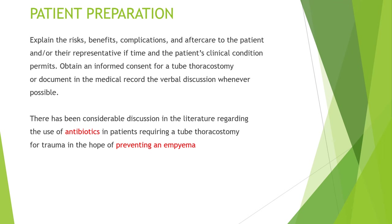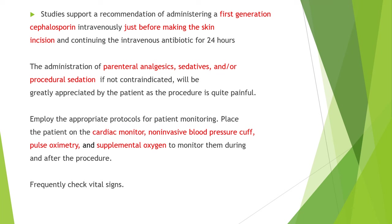Patient preparation: Explain the risks, benefits, complications, and aftercare to the patient and their representative when the patient's clinical condition permits. Obtain informed consent for the tube thoracostomy and document it in the medical record. There has been considerable discussion in the literature regarding the use of antibiotics in patients requiring tube thoracostomy for trauma. Studies support administering a first-generation cephalosporin intravenously just before making the skin incision and continuing intravenous antibiotics. The administration of parenteral analgesics and sedatives, if not contraindicated, will be greatly appreciated by the patient as the procedure is quite painful. Employ the appropriate protocol for patient monitoring.